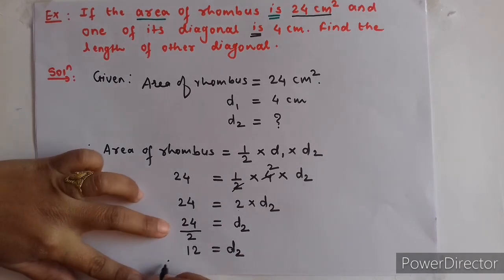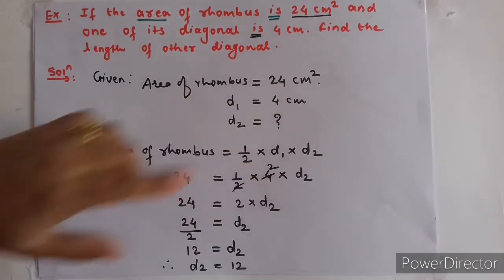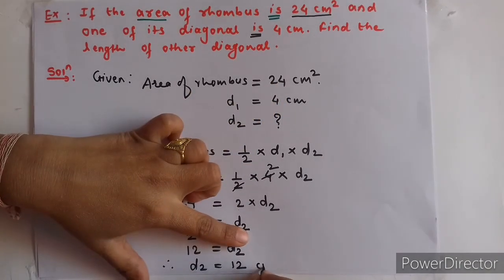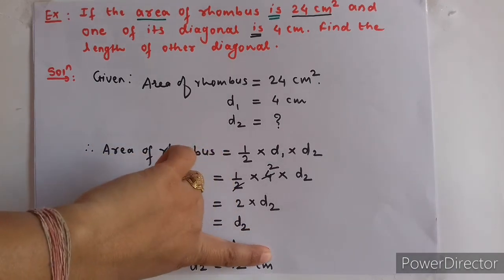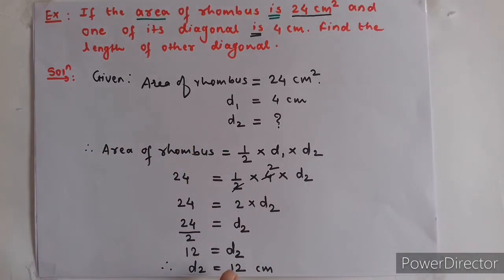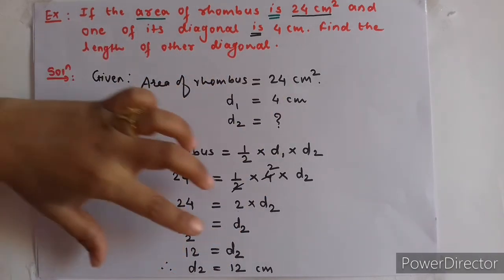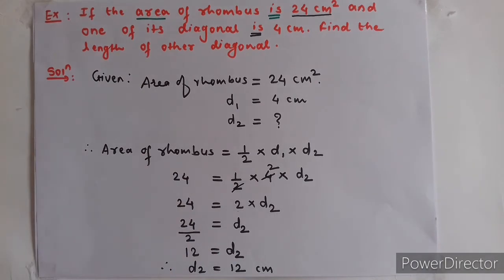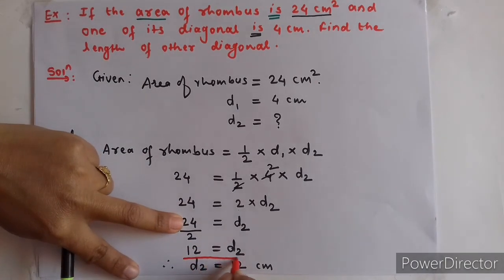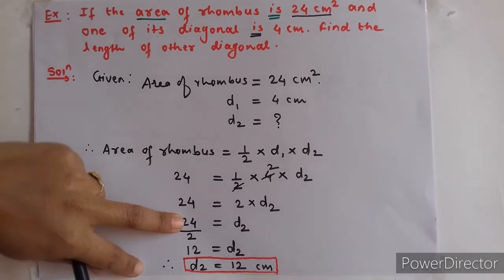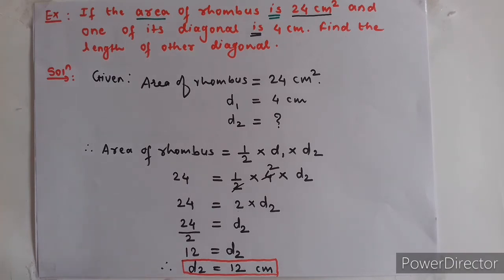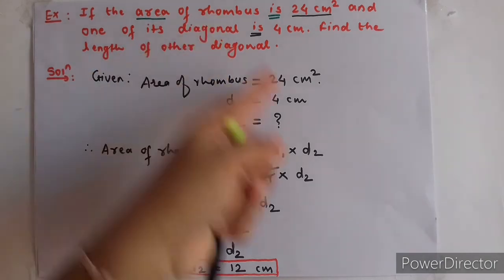So 12 equals D2, which we can write as: therefore, D2 = 12 cm. Can we write cm squared here? No, because we are not finding area — we are finding the length of the other diagonal. So the unit is centimeter, not centimeter squared. Therefore, the length of the other diagonal is 12 cm.